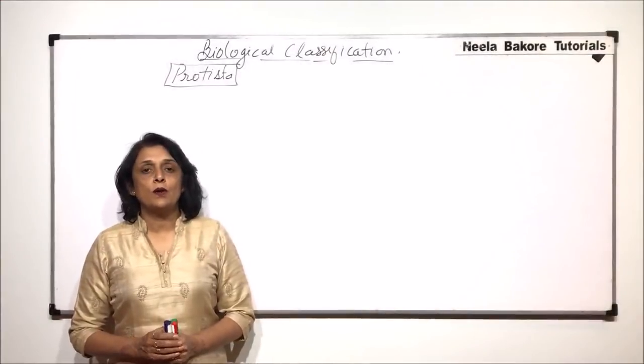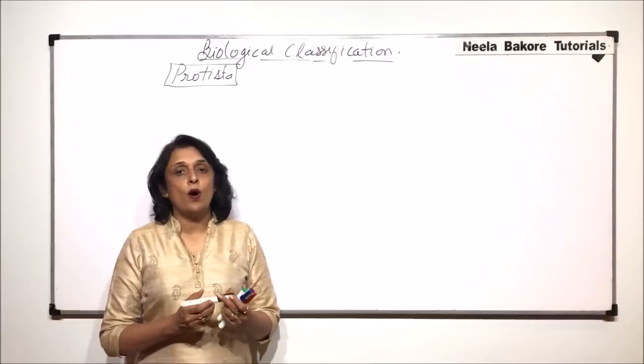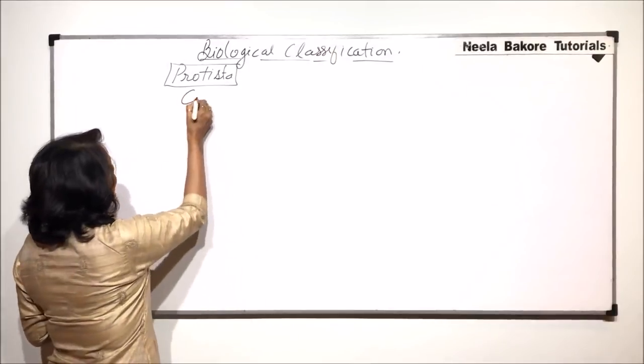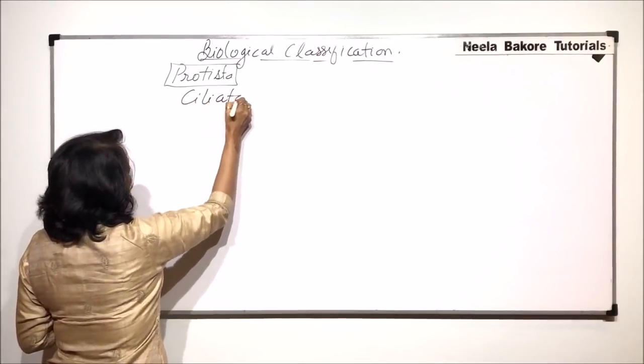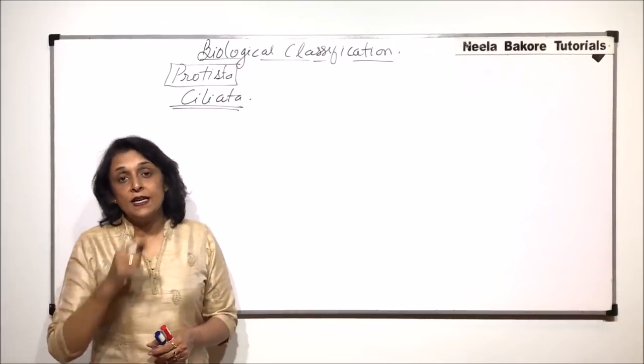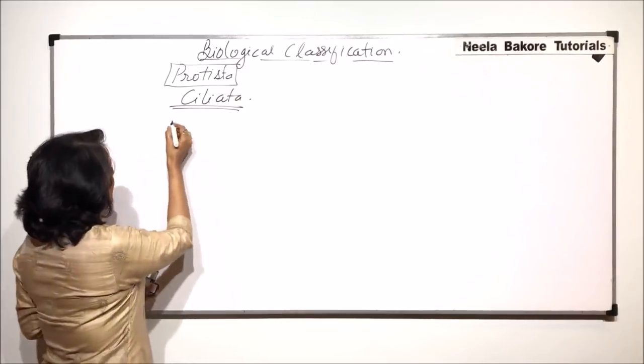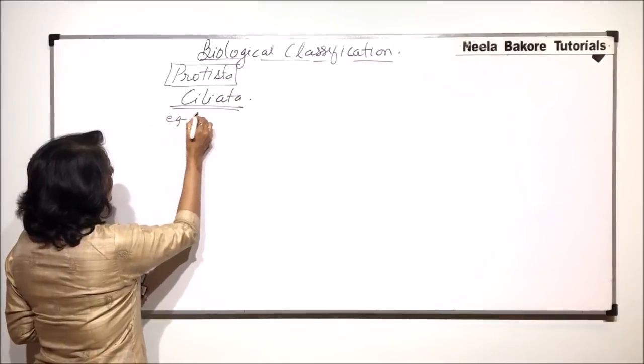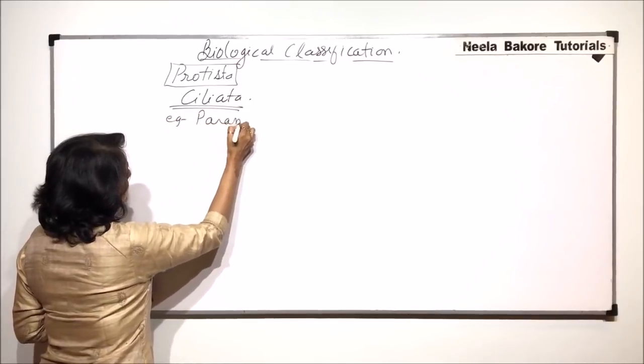In this video, we will talk about one more group of protista, and that is ciliata. As the name tells us, the locomotive structures are cilia. The example that we would take up is paramecium.